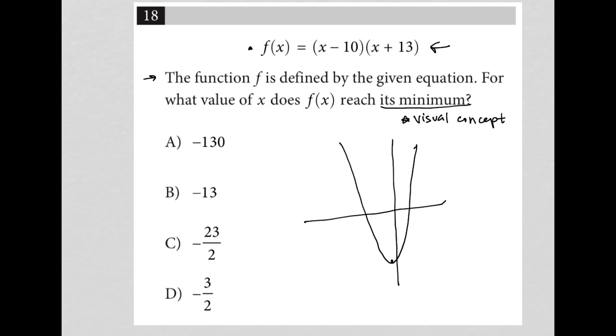And that the x value of the minimum, the vertex here, aligns with negative 1.5. That negative 1.5 is the same as negative 3 halves. So there's our answer.